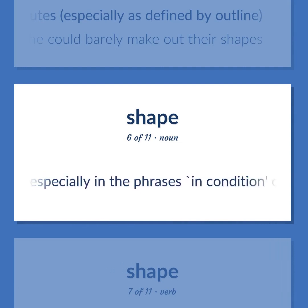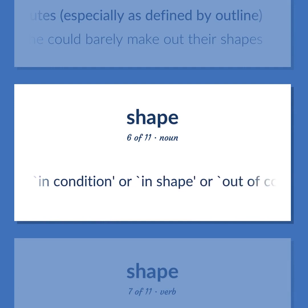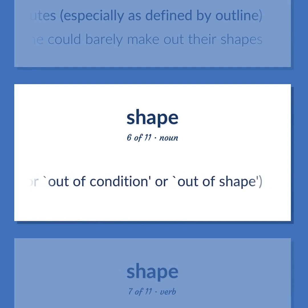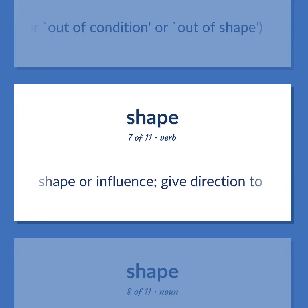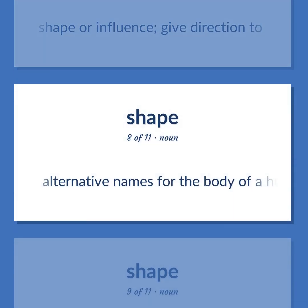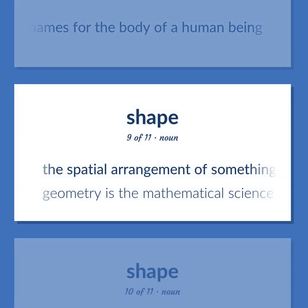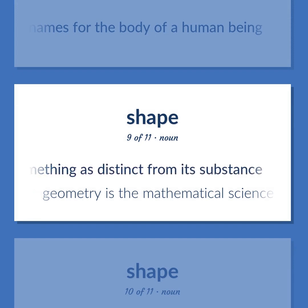Shape: especially in the phrases 'in condition,' 'in shape,' 'out of condition,' or 'out of shape.' Shape or influence; give direction to. Alternative names for the body of a human being. The spatial arrangement of something as distinct from its substance — 'Geometry is the mathematical science of shape.'